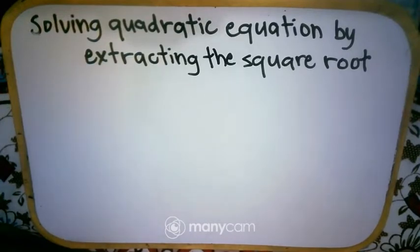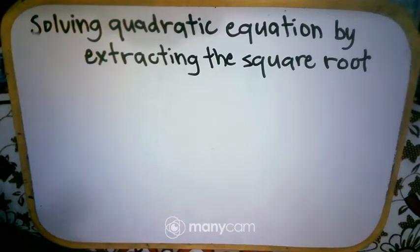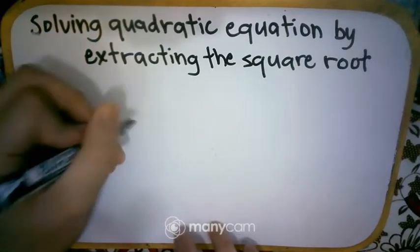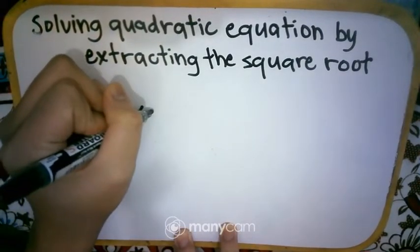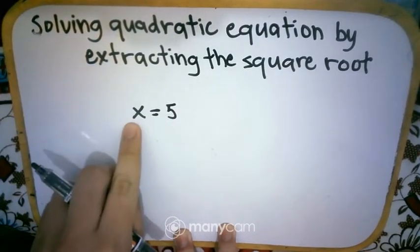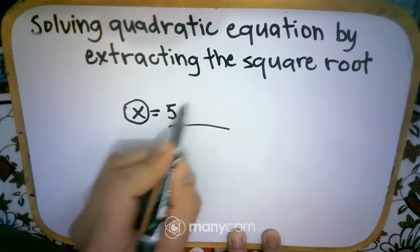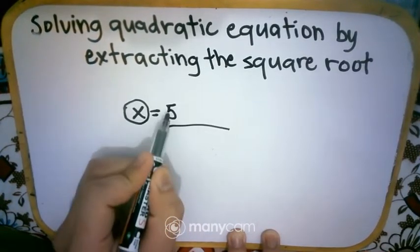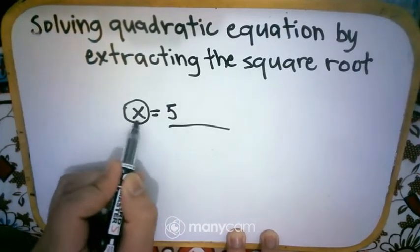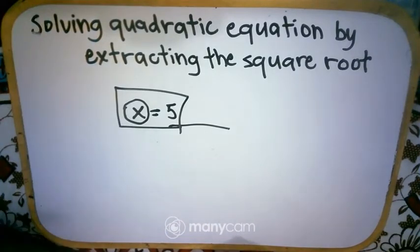What does it mean when we say the variable should be alone? In solving quadratic equations, when the variable is alone on one side of the equation, it means you are done solving. For example, we have x is equal to 5. The variable x is alone on the left side, with only a number on the right side — therefore you are done solving. That is what it means: the variable should be alone.